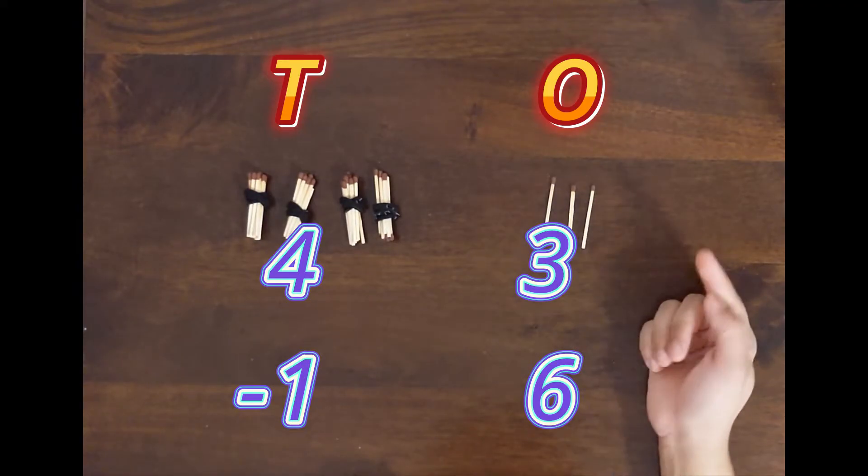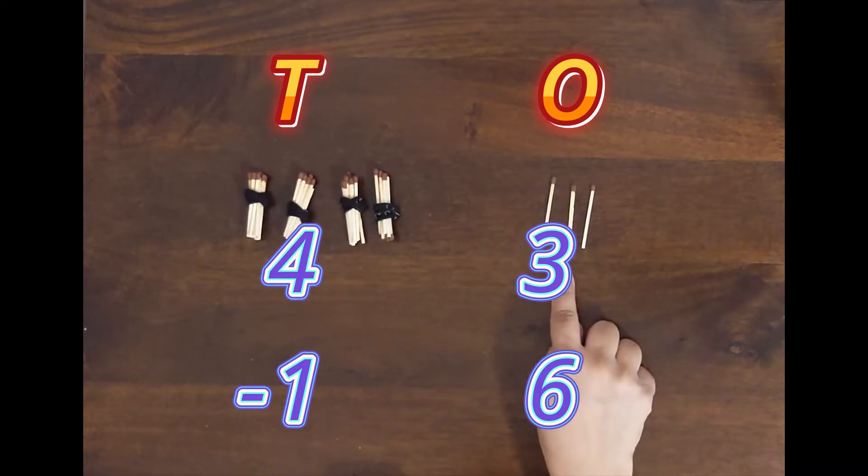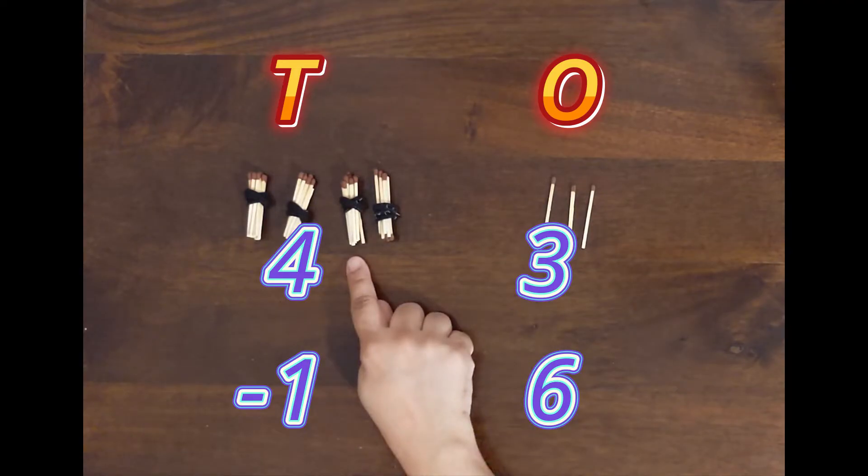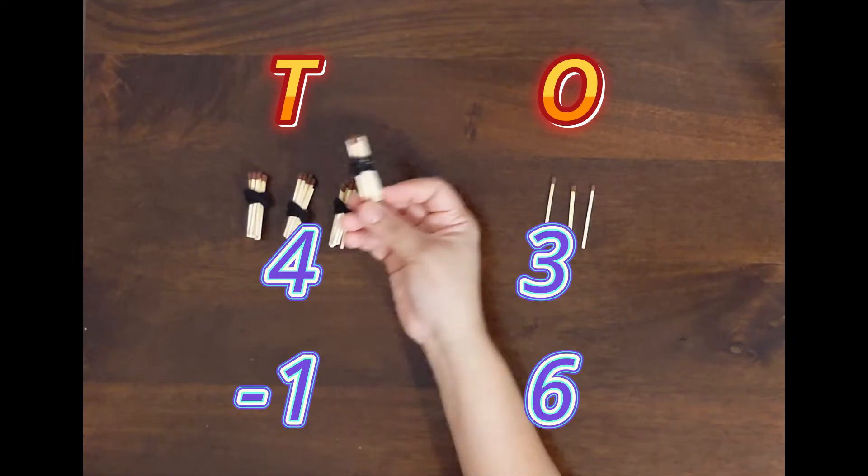No, we cannot take 6 ones from 3 ones because we are having less ones here. So what we will do, we will go to tens and ask for borrow.